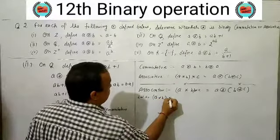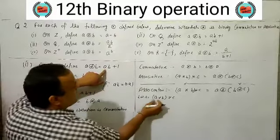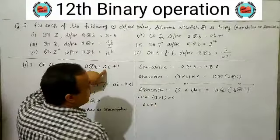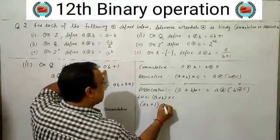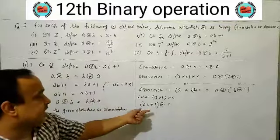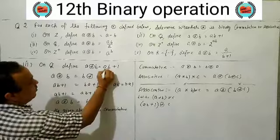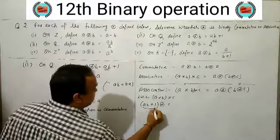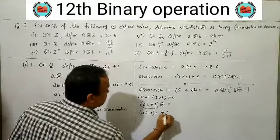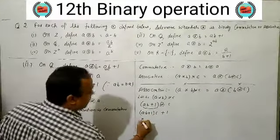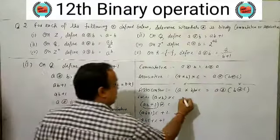For associative, left hand side: (A★B)★C. A★B = AB+1. Then (AB+1)★C = product of (AB+1) and C, plus 1 = ABC + C + 1.